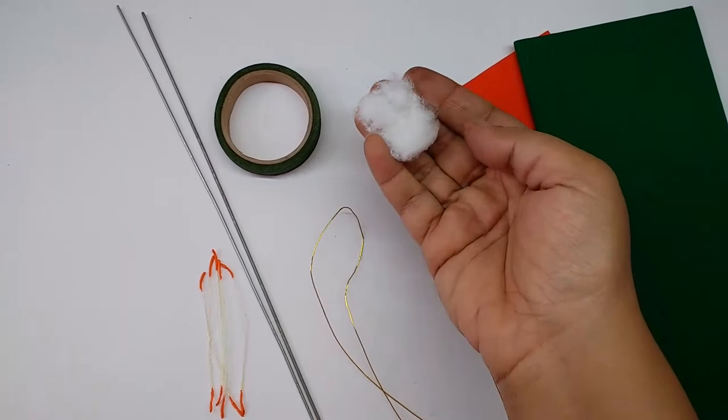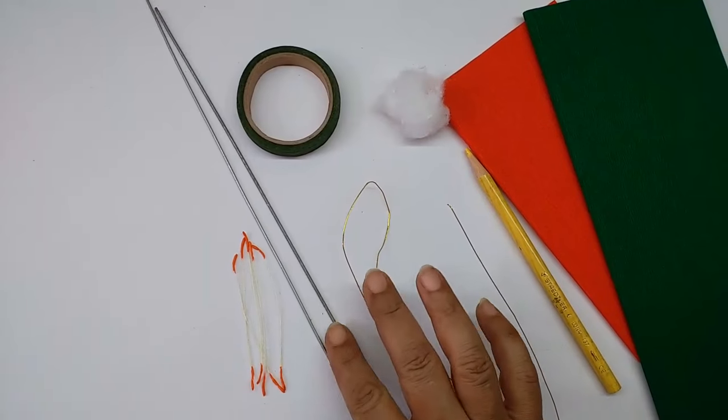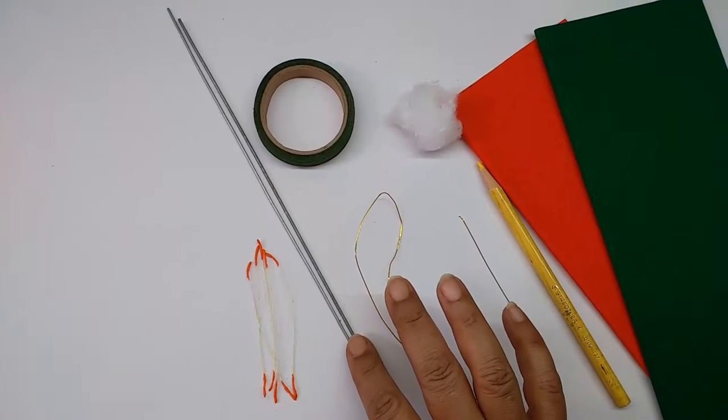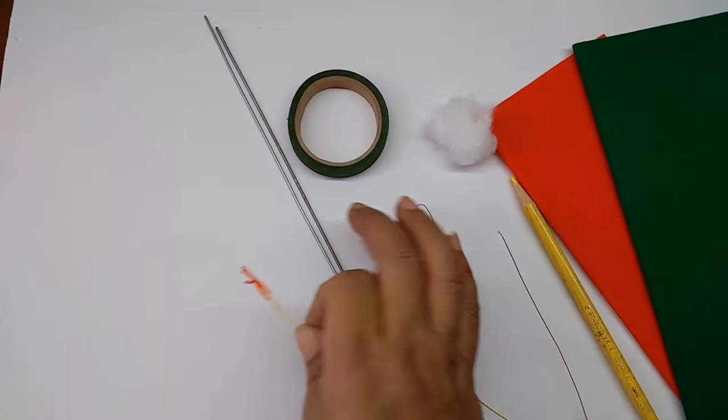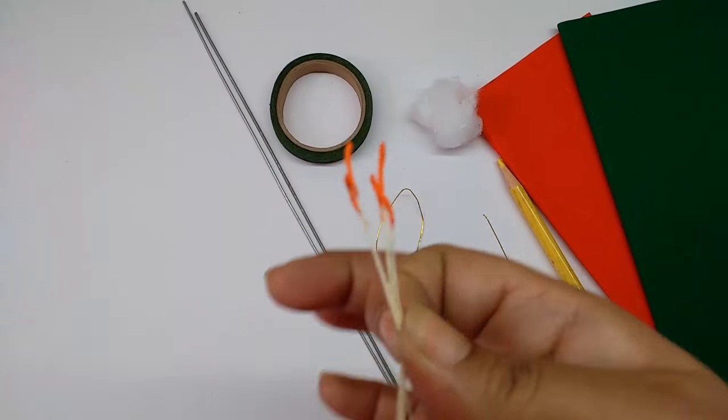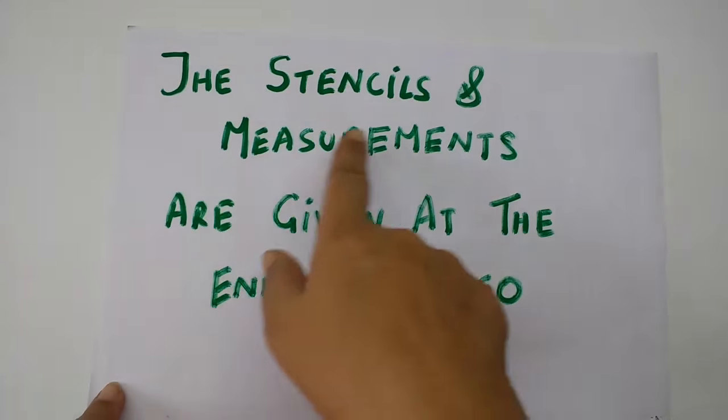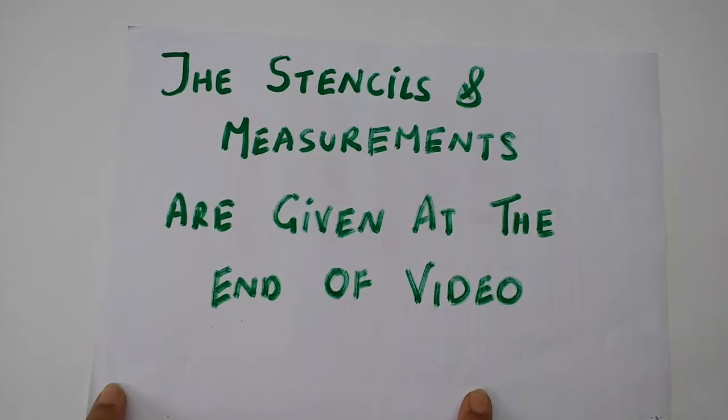Green floral tape, some cotton wool, thick wires for the stem, and some slightly long pips. The stencils and measurements are given at the end of video.